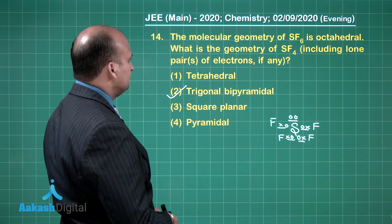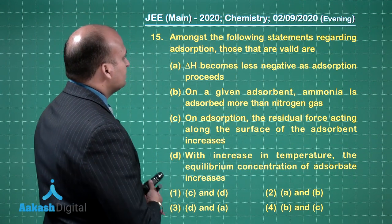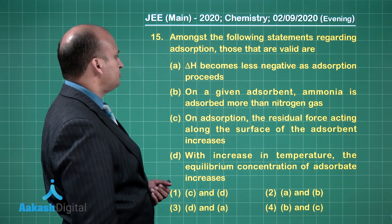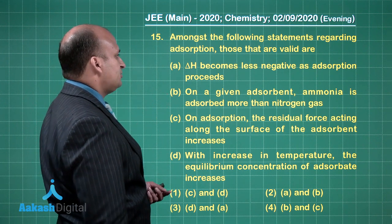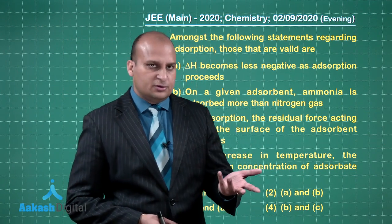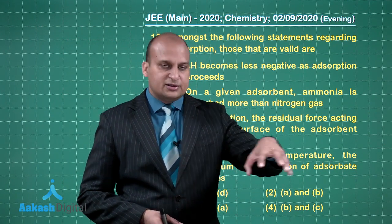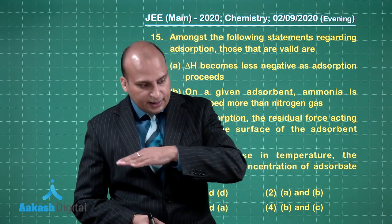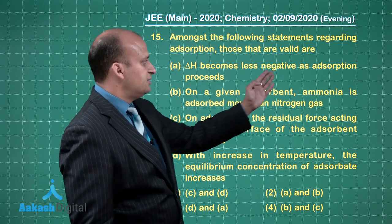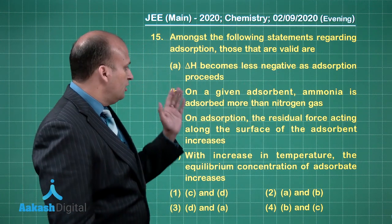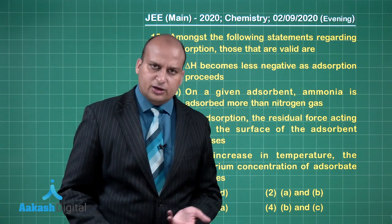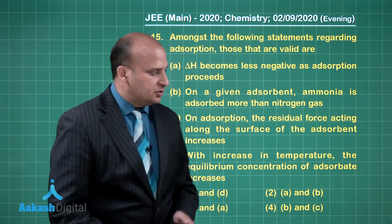Let's look at the next question. Amongst the following statements regarding adsorption, those that are valid - basically, the statements which are true. Delta H becomes less negative as adsorption proceeds - yes. Whether you are talking about chemisorption, then the active sites are getting covered up. If you are talking about physisorption, the layers are being formed. So the attraction goes less. So the first statement is right. On a given adsorbent, ammonia is adsorbed more than nitrogen gas. Yes, because ammonia is polar in nature. A and B are correct.